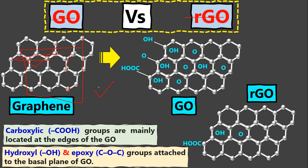This is not the proper way to say that from graphene we get graphene oxide and then reduced graphene oxide — that is the wrong way — but just for understanding, I want to differentiate between graphene oxide and reduced graphene oxide.